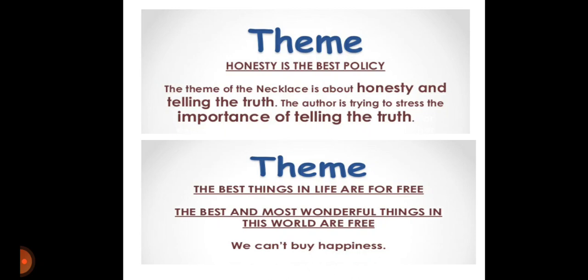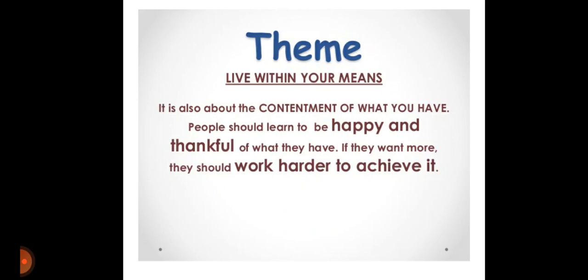The themes focused on in this chapter are: first, honesty is the best policy — the theme of The Necklace is about honesty and telling the truth, and the author stresses the importance of telling the truth. Second, the best things in life are free — the most wonderful things in this world are free and we can't buy happiness. Third, live within your means — be contented with what you have. People should learn to be happy and thankful for what they have, and if they want more they should work harder to achieve it, with no shortcuts adopted.